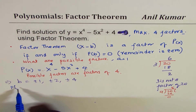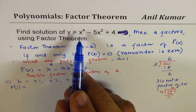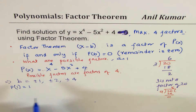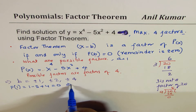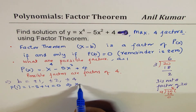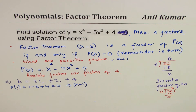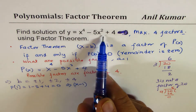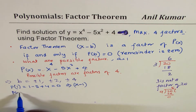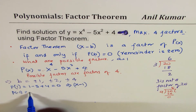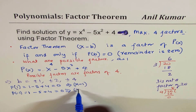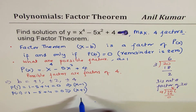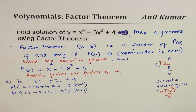If I write the value 1 to start with: p(1) = 1 to the power of 4 minus 5 plus 4, which is indeed 0. So that means x minus 1 is a factor. Now, it is an even function, so p(-1) will also be 0: (-1) to the power of 4 minus 5 plus 4 equals 0. This implies that x plus 1 is also a factor.